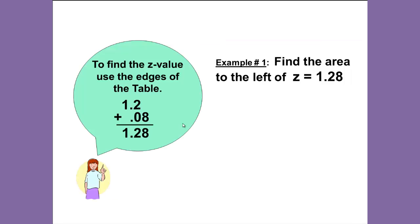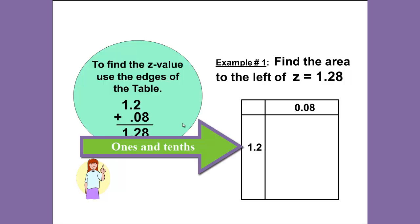To find the Z value, we want to use the edges of the table. The edges of the table give us along the left edge the ones and tenths place, while the top edge contains the hundredths place value.